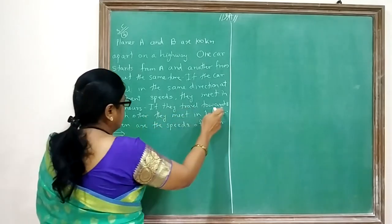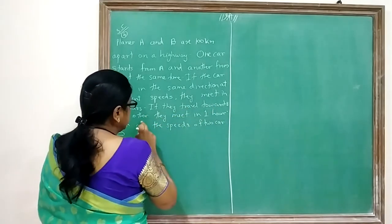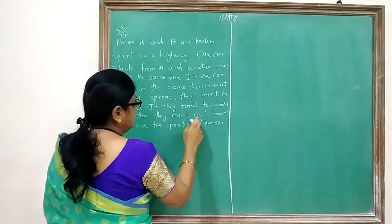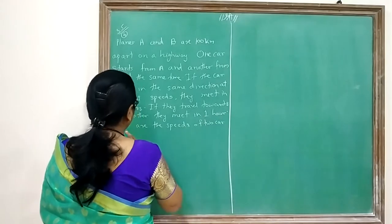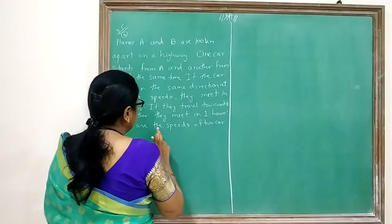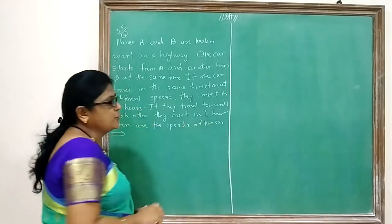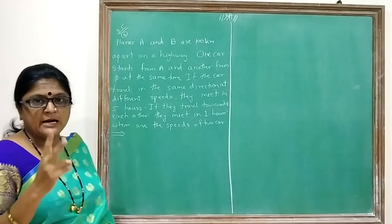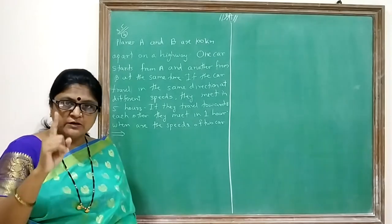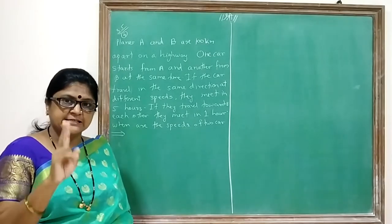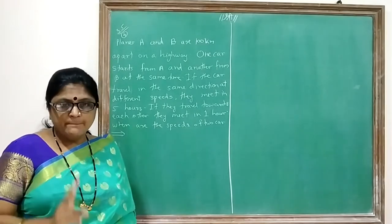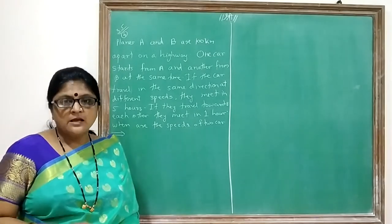If they travel towards each other, they meet in 1 hour. So we have two cars present — one from A and one from B.